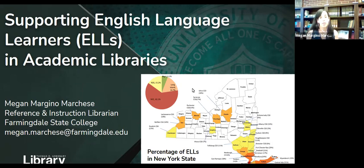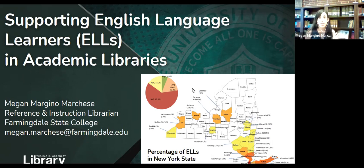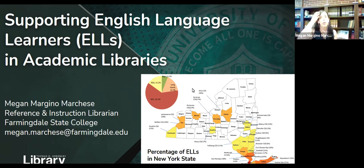When I was doing research on ELL and academic libraries, I found somewhat of a gap in the literature relating to academic libraries and college students who were formerly in a K through 12 ENL program. What I did find information on was academic libraries and international students, international students in higher education, K through 12 school libraries and ELLs, K through 12 ENL programs, and public libraries and ELLs. I was mostly interested in ELLs who are former K through 12 ENL students and who are no longer part of a formal ENL program, because I think these are some of the students that I work with at Farmingdale.